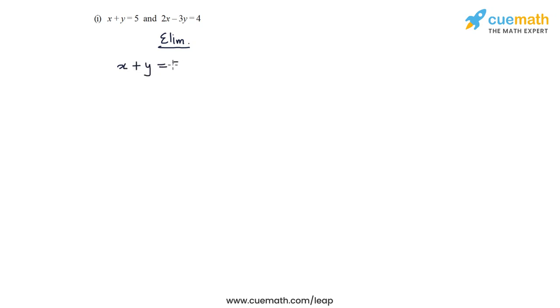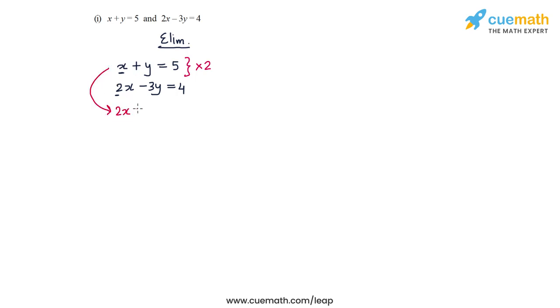Let's first do this using elimination. We have x plus y equal to 5 and 2x minus 3y equal to 4. I will make the coefficient of x in the first equation equal to 2 so that the coefficients of x in both equations match. I can do that by multiplying the first equation by 2, and if I do that I get the modified equation 2x plus 2y equal to 10.